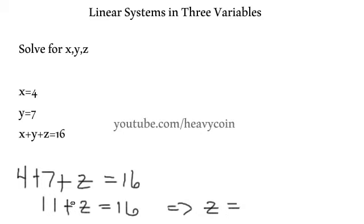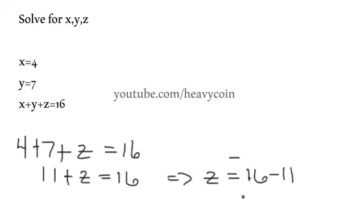So this is 11 plus z is equal to 16. So then we have z is equal to, so we take the 11, take it to the other side. So we end up with 16 minus 11, which is going to be equal to, I was going to write it up above, but I'll write it down below. 16 minus 11, and the difference in that is 5.